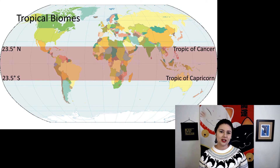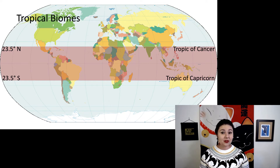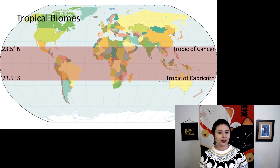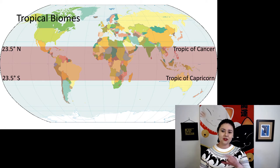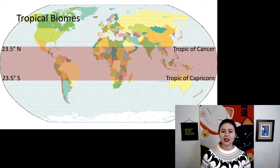Primates mostly live in tropical biomes or tropical environments. Tropical just means it's within the Tropic of Cancer to the north and Tropic of Capricorn to the south. There is a pretty decent amount of land that falls within this, but that is mostly within South America and Africa. There's a little bit of Asia as well, as well as a little bit of Central America.